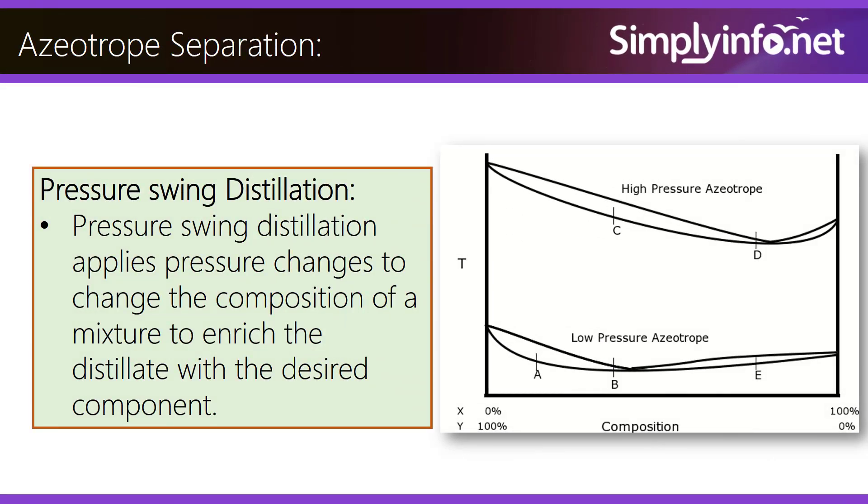Azeotropes can be separated using pressure swing distillation, which applies pressure changes to alter the composition of the mixture and enrich the distillation with the desired component.